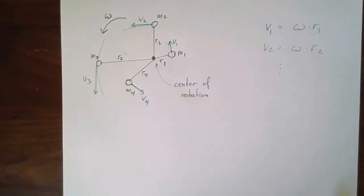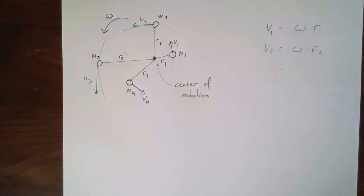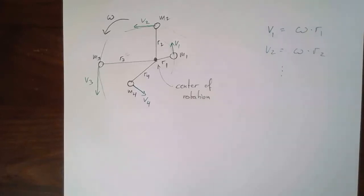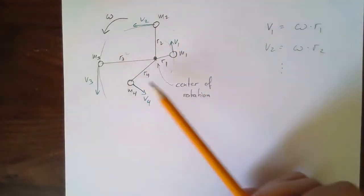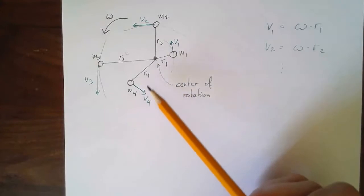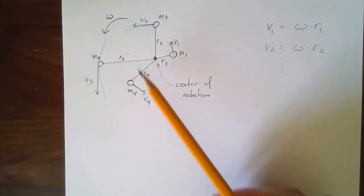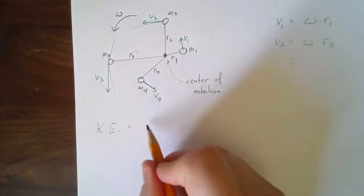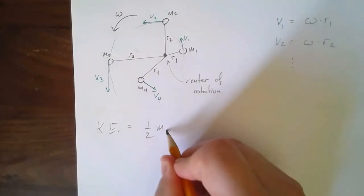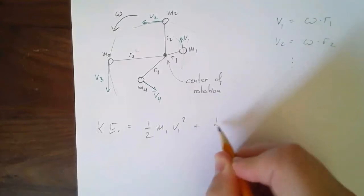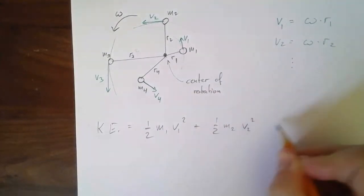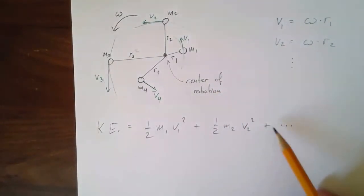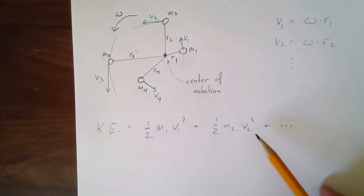Let's write down the total kinetic energy of this system. I'm not inventing some new kinetic energy — I'm just going to apply the kinetic energy we know, ½mv², and re-express it in terms of the rotational properties. The kinetic energy is going to be ½m1·v1² + ½m2·v2² + ½m3·v3² + ½m4·v4².